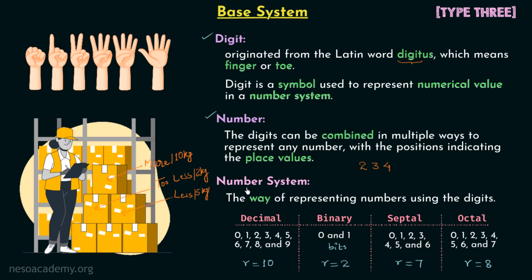The digits used to represent a quantity in one number system can be more or less in another. For example, 5 in decimal, when converted to binary, is equal to 101. In binary we can only have 0 and 1, so we need 3 bits — or 3 binary digits — to represent 5, which means we need more digits in binary compared to decimal. To represent a number in binary notation, we place it inside parentheses and write 2 as a subscript to indicate the base.